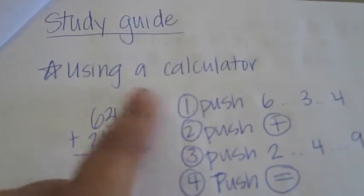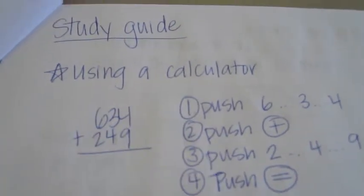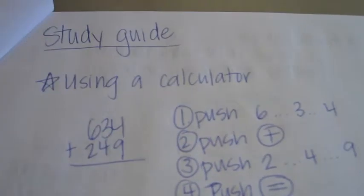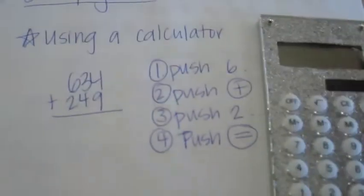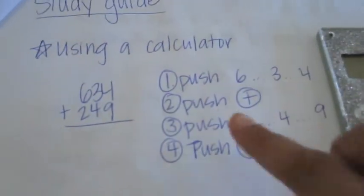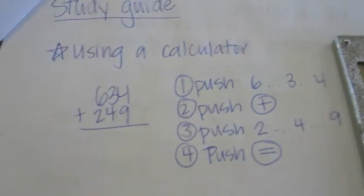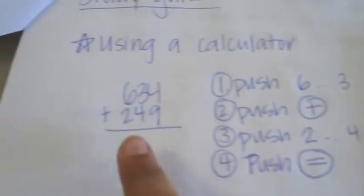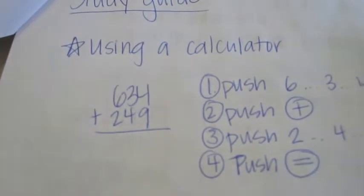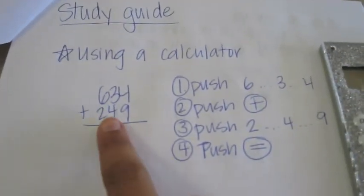Using a calculator: On your test you will have problems where you need to take out your calculator and do the problem. The first thing you're going to do is make sure your calculator is on, then make sure it's clear — that means you should see a zero. Look at the problem.